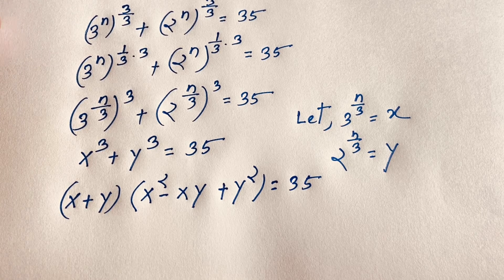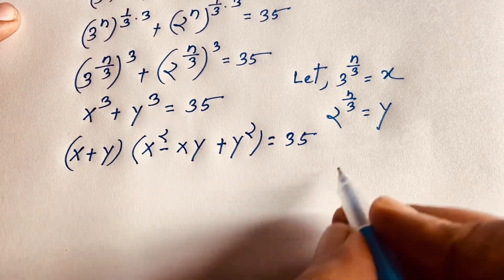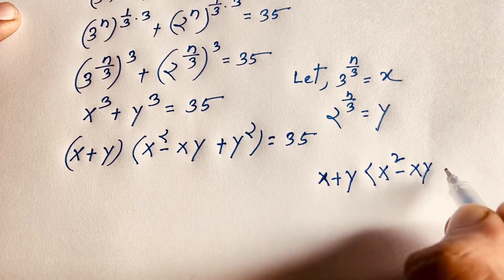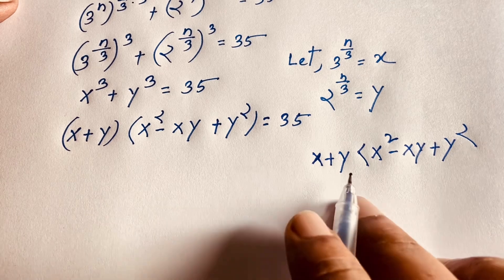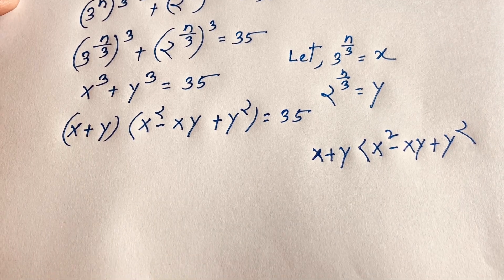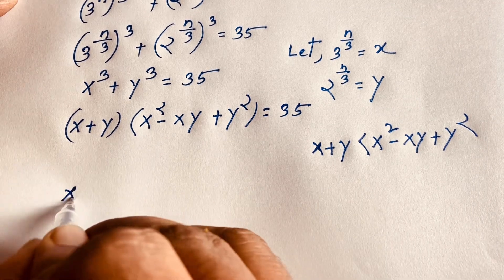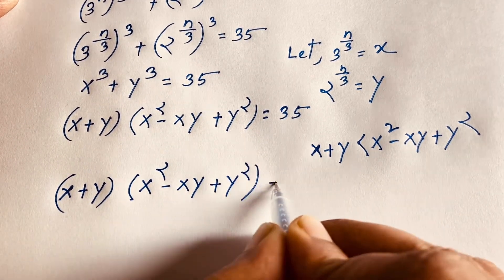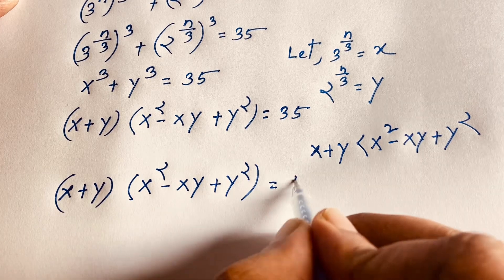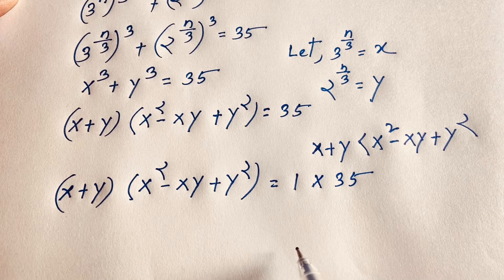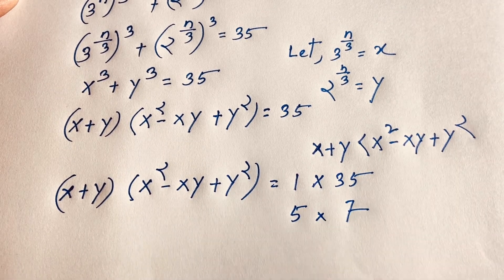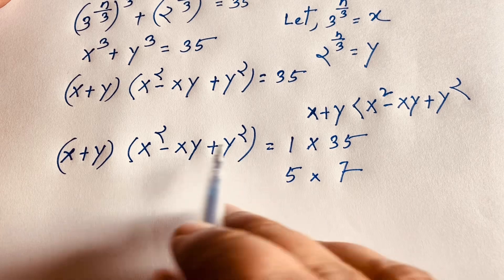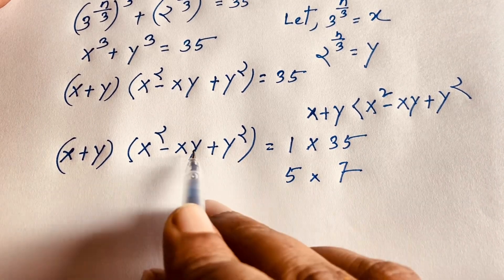Now we have two factors. Note that x + y is less than x² − xy + y². So we consider the factor pairs of 35: either 1 × 35 or 5 × 7. This gives two cases: Case 1 — x + y = 1 and x² − xy + y² = 35; or Case 2 — x + y = 5 and x² − xy + y² = 7.